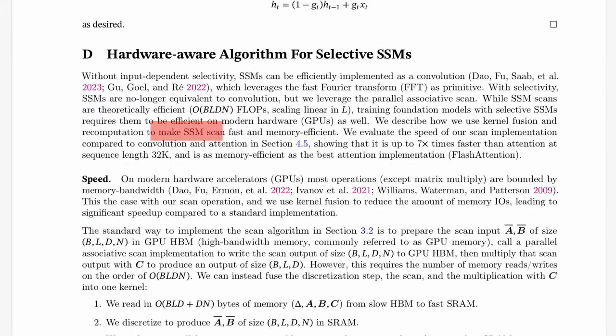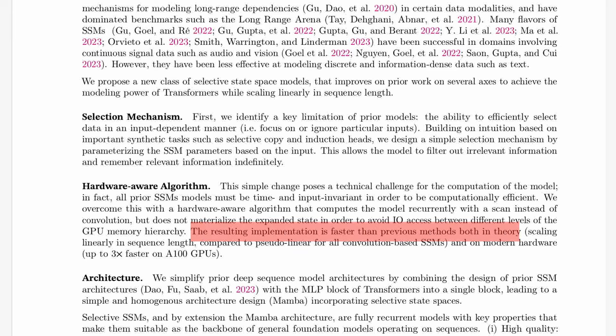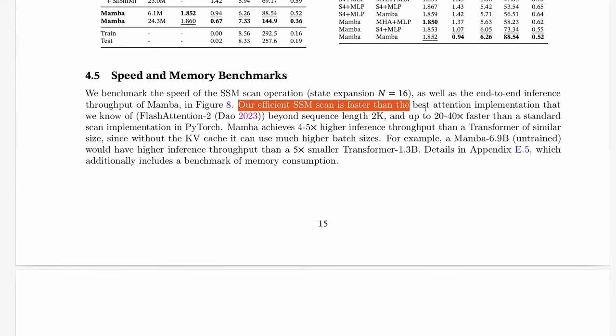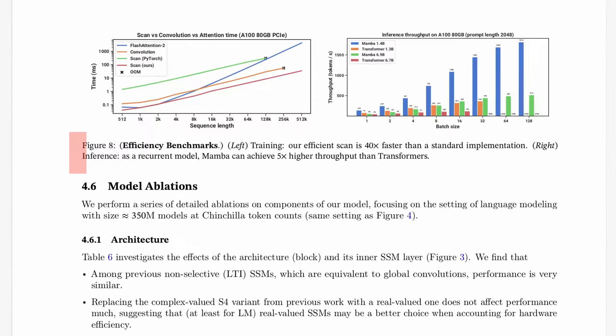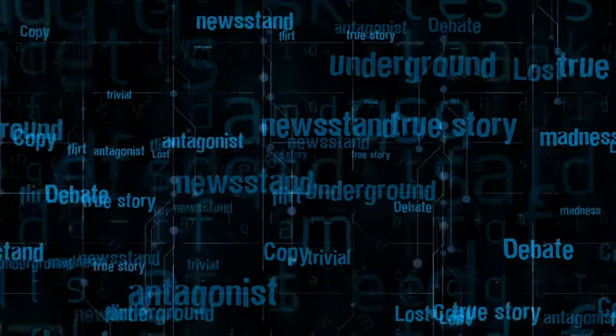Not only does Mamba need smaller training data compared to transformer models, but also Mamba's selective processing translates to significantly faster predictions compared to attention-based models. These two advantages may greatly benefit real-time applications such as language translation and text generation.